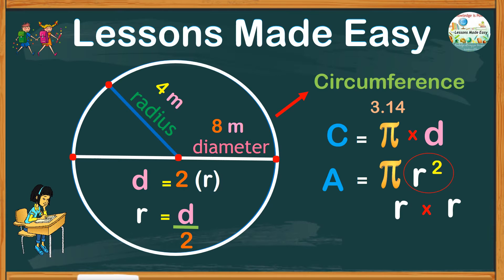Like in this example, the radius is 4 meters, and so if we square the radius it would be 4 meters times 4 meters.